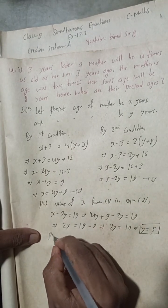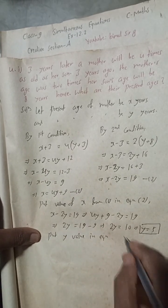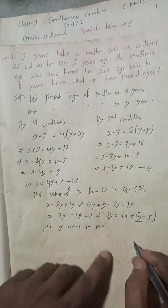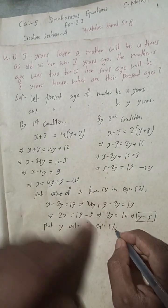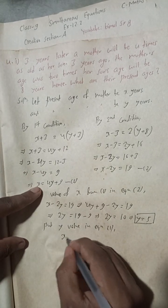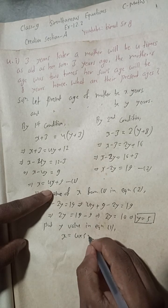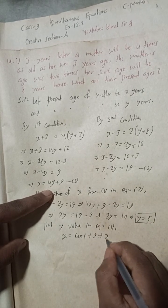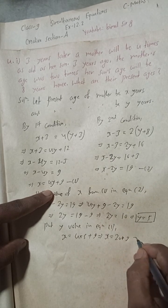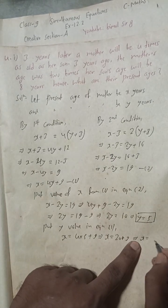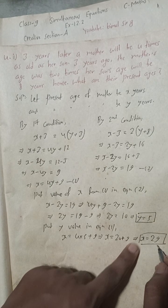Now put the value of y into equation 1. x = 4y + 9 = 4(5) + 9 = 20 + 9 = 29. So x = 29 years.